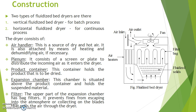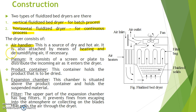Now, the construction of a fluidized bed dryer. Fluidized bed dryers are of two types: vertical fluidized bed dryer for batch process and horizontal fluidized bed dryer for continuous process. There are five different parts. The first part is the air handler, which is the source of dry and hot air. It is also equipped with heating and dehumidifying components if necessary, including air heaters, air inlet, and air outlet.